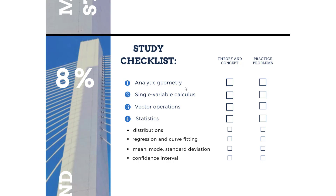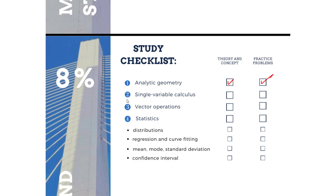You would essentially just check this off if you feel like you've covered everything for analytic geometry. Then after the theory and concept has been covered, you can move on to practice questions — you will need to do as many practice questions as you can. Once you feel comfortable with the analytic geometry section, you can check that off. For statistics, you're going to have these subsections as well.